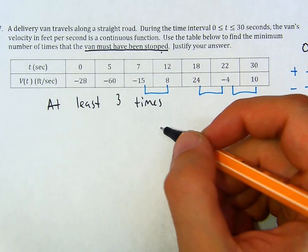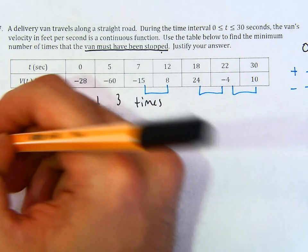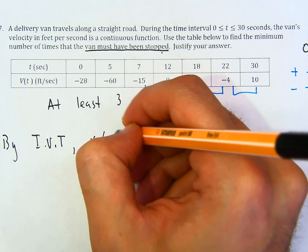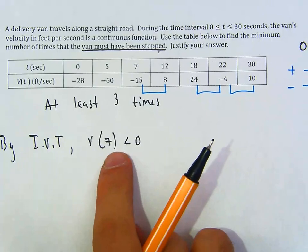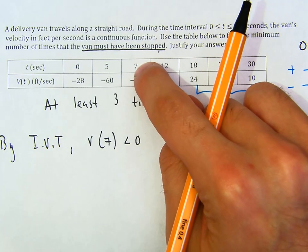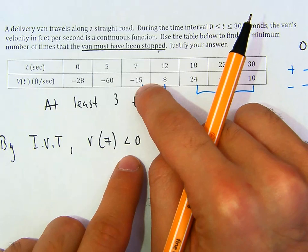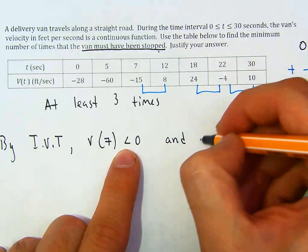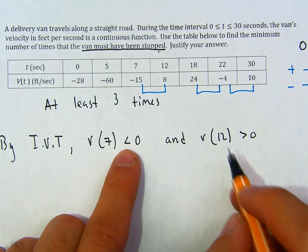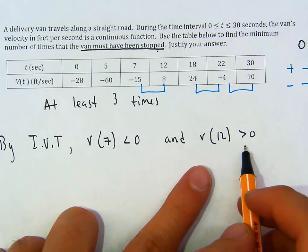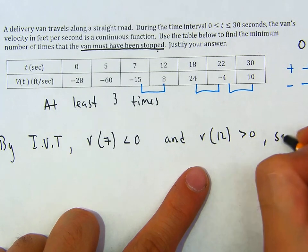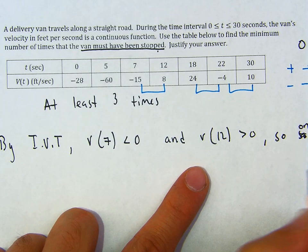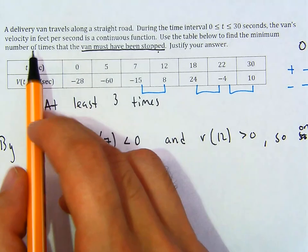If you just write the count, it's not enough — you have to use IVT. By IVT: V of 7 is less than 0 (negative 15) and V of 12 is greater than 0. The second you have something less than zero and then greater than zero, on the interval from 7 to 12, the van must have stopped.